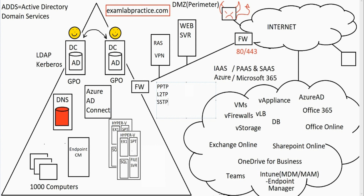We also have SSTP, Secure Socket Tunneling Protocol. Vista came out in the year 2008, and that's when this was released. It uses SSL or TLS for encryption. It's probably the fastest of the protocols, but the one Microsoft is really shining on now is IKEv2. This is the one that came out in the year 2010 when Windows 7 came out.